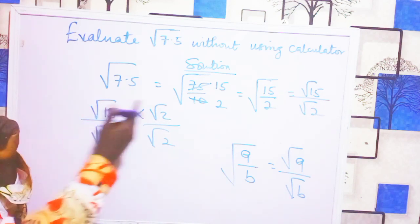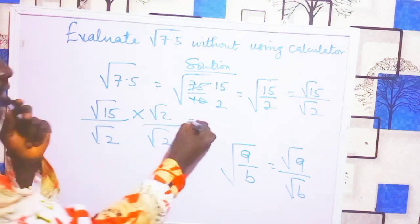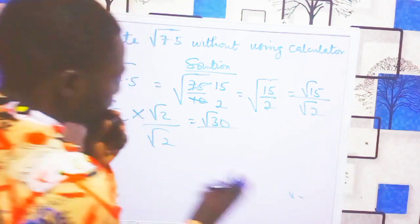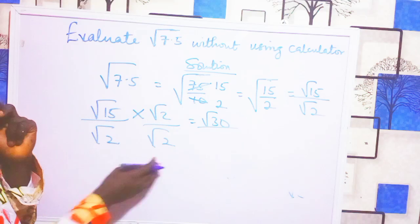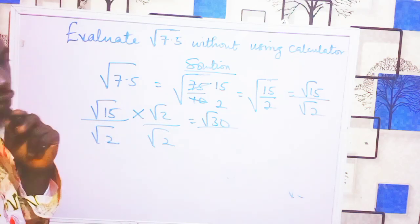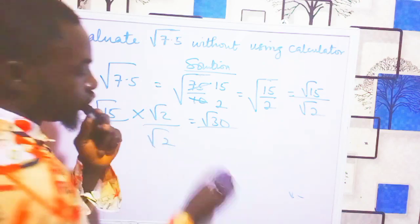Square root of 15 times root 2 gives us root 30 in the numerator. Root 2 times root 2 equals 2 in the denominator.